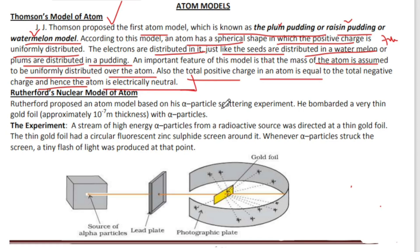So this model — the plum pudding model, raisin pudding model, or watermelon model — is what J.J. Thomson first proposed as the first atom model.